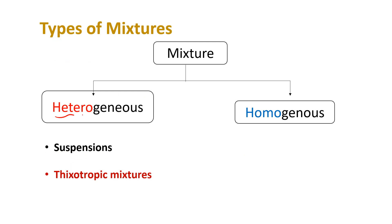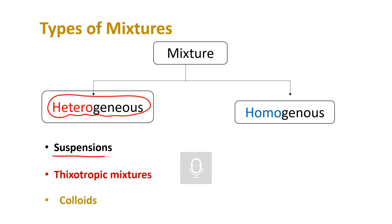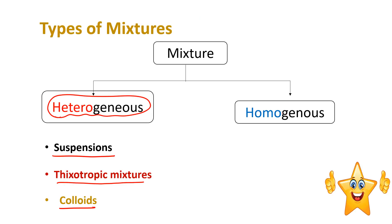What are some types of heterogeneous mixtures — المخلوط الغير متجانس? We have suspensions, thixotropic mixtures, and colloids. And homogeneous mixtures — we'll have a look at those later — like solutions.